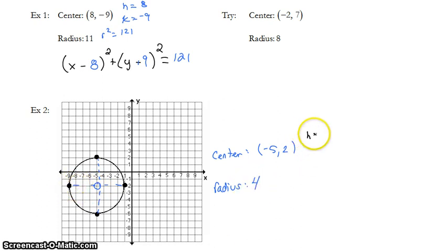Well, that means h is negative 5, k is 2, and r squared is 16. My equation, then, is x plus 5, because minus negative 5, squared, plus y minus 2 squared, equals 16.